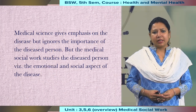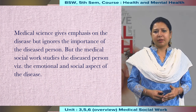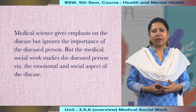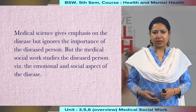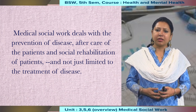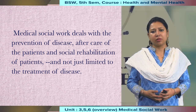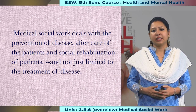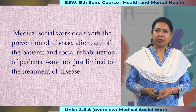Medical science gives emphasis on the disease but ignores other aspects — the emotional needs of the diseased person and the turmoil of the family members. Medical social work studies not only the disease and the person but also the psychological, social, and emotional needs of the family and the patient. Medical social work deals with the prevention of disease by creating awareness, and after care of the patient, which is known as the social rehabilitation process. Medical social work is not only limited to the treatment process but also how a person is adjusting to or accepting the disease and the treatment one needs to go through.